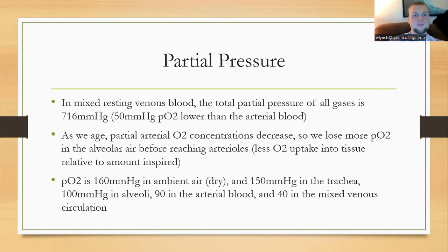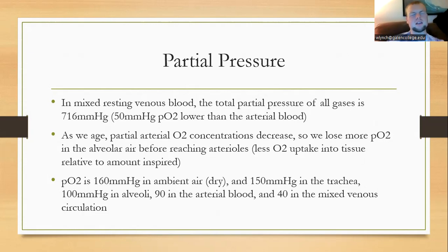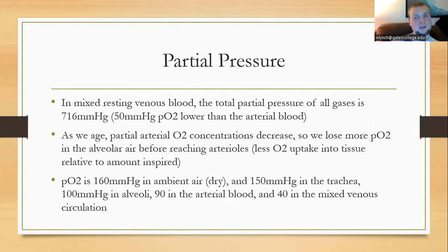Mixed resting venous blood has a total partial pressure of 716 mmHg because there is about 50 mmHg less partial pressure of oxygen than arterial blood. Partial pressure of arterial blood concentrations decrease as we age due to more resistance and less efficient gas exchange. Partial pressure of oxygen is about 160 mmHg in ambient air, decreasing to 150 mmHg in the trachea, about 100 mmHg at the alveoli, 90 mmHg in arterial blood, and 40 mmHg in the venous circulation.